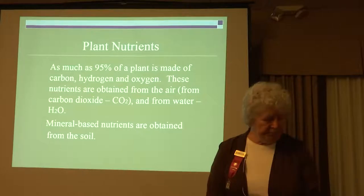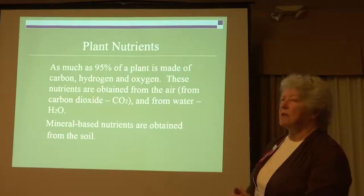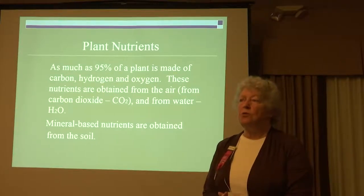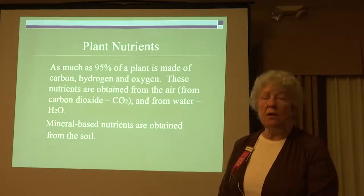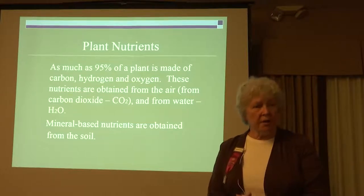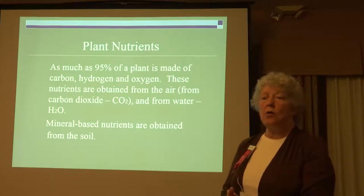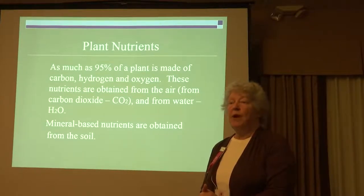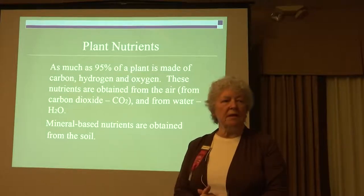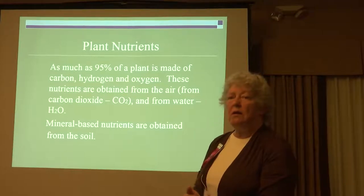Plant nutrients: as much as 95% of a plant is made up of carbon, hydrogen, and oxygen. The carbon came from CO₂. The oxygen came from CO₂. Hydrogen came from water, which also has an oxygen molecule. So most of what a plant needs is air and water, but that little missing percent — that other 5% — that's the important stuff. Those are the nutrients we deal with, and we put them on or in the soil.